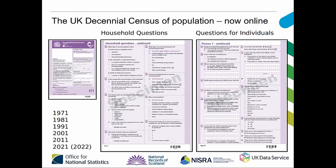The population fills in a census form and answers questions relating to them as either an individual or the household in which they reside. You can see on the slide the household questions on the left and the individual questions on the right. It's a way of the government getting information on the population every ten years, so it's a great source of information.